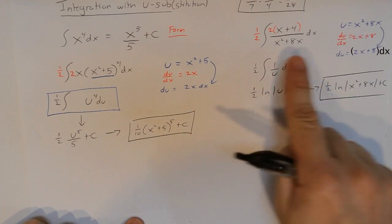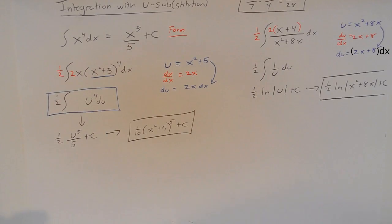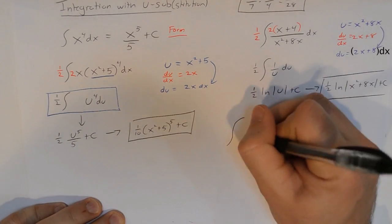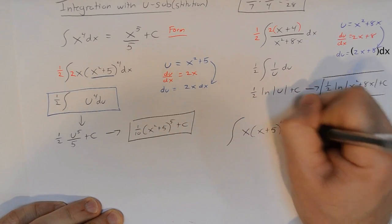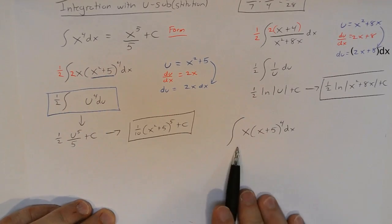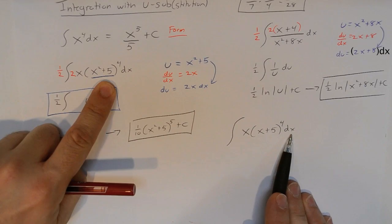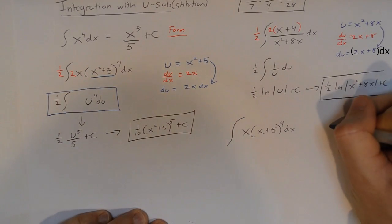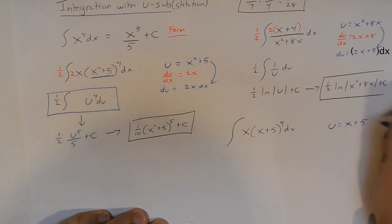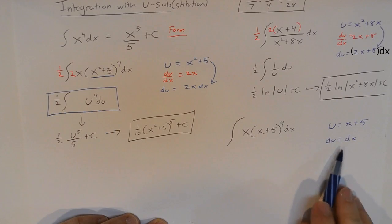Again, the idea of the u sub is to turn an integral that you're not sure how to handle into something that you know already. And let's look at one last example here. This integral looks a lot like the one that I had over here. I have an x times x plus 5 to the fourth dx. The only difference is instead of x squared, I've got just an x there. So, let's try that same u sub we did. If I let u equal x plus 5, then du dx is just 1. So, du, in this case, I'll go right to, is simply dx. So, that's a pretty simple substitution there.